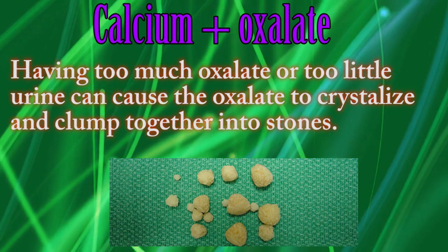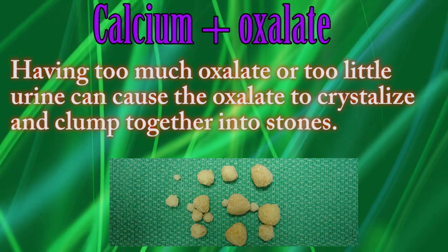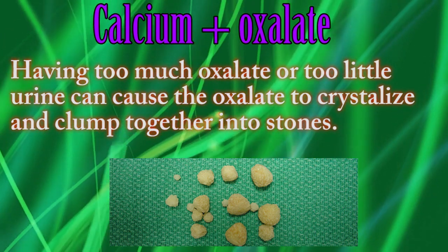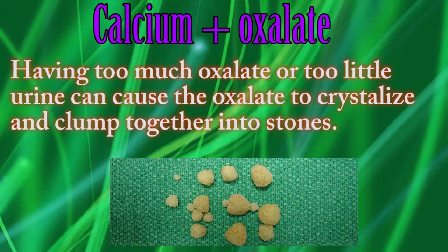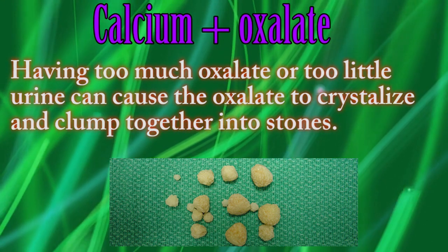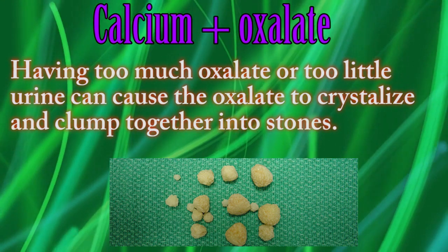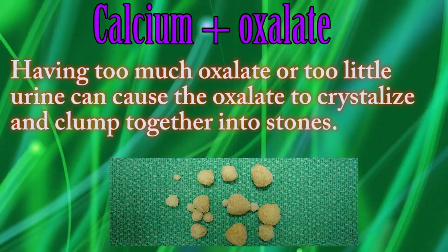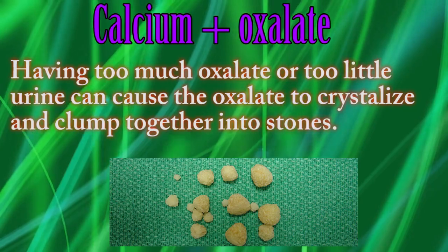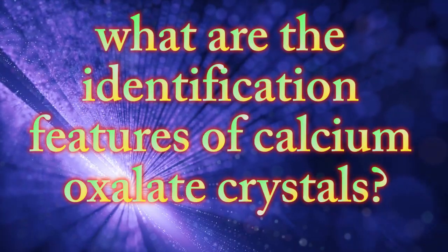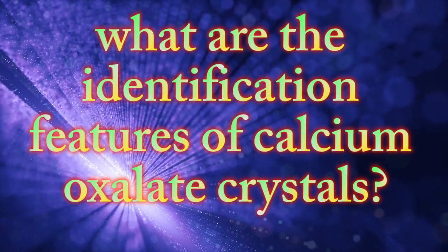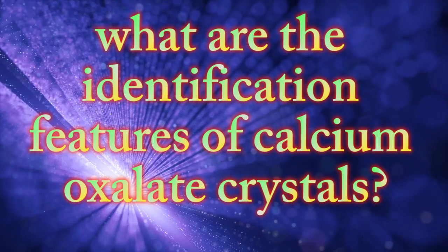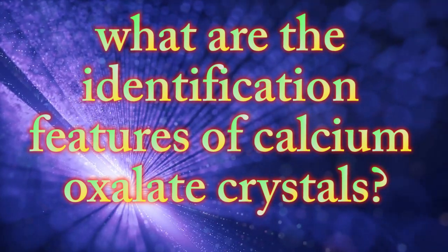Having too much oxalate or too little urine can cause the oxalate to crystallize and clump together into stones. What are the identification features of calcium oxalate crystals?